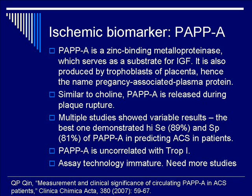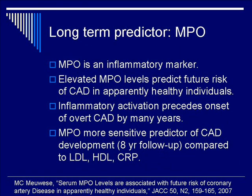PAPPA is another ischemic biomarker — a zinc-binding metalloproteinase that serves as a substrate for IGF. It is uncorrelated with troponin I, which makes it useful. MPO is an inflammatory marker that, while typically not considered useful in the ER, could potentially be tested to predict a patient's long-term risk of developing CAD.